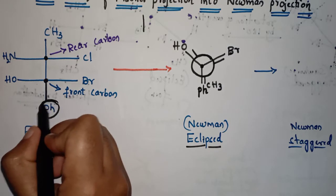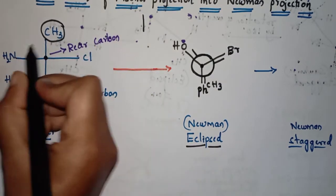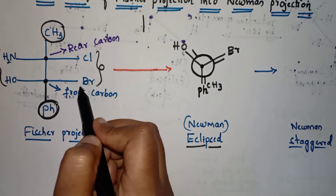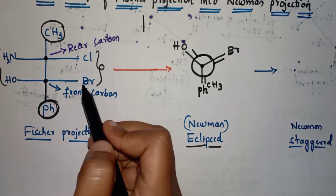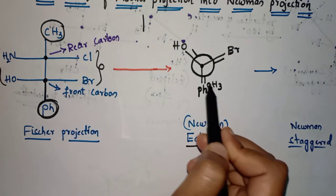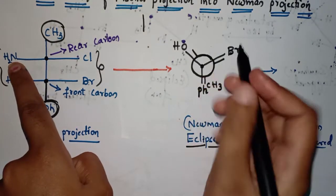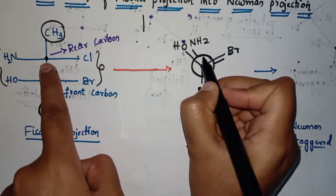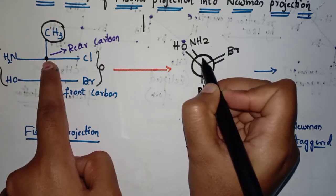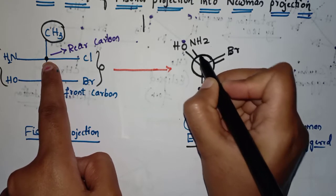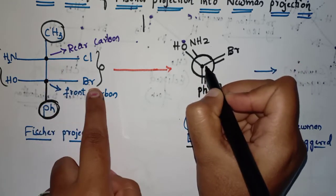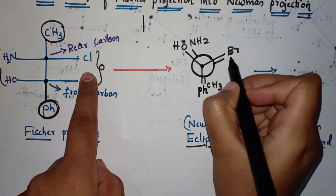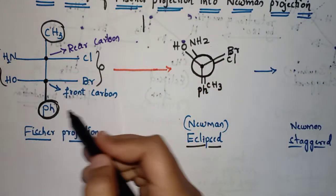Here is the easy trick to remember: Ph and CH3 make one pair, OH and NH2 make one pair, and Br and Cl make one pair — we have three pairs. With Ph we write CH3, with OH we write NH2 on the circle (back carbon), and with Br on the front carbon we write Cl on the back carbon. Just make these pairs and write it easily.